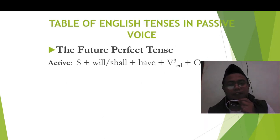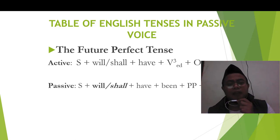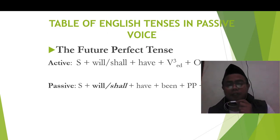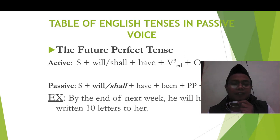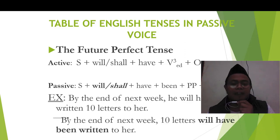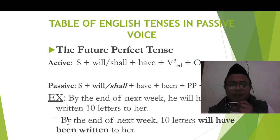The future perfect tense. Subject plus will plus have plus verb 3. It becomes subject plus will plus have been plus past participle. By the end of next week, he will have written 10 letters to her. So it becomes: By the end of next week, 10 letters will have been written to her.